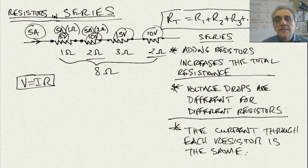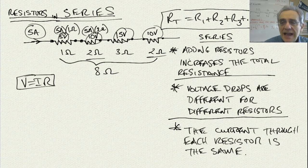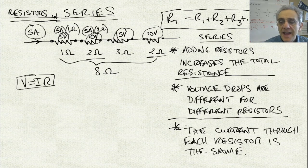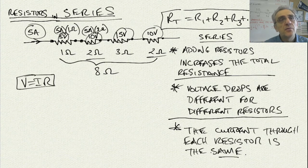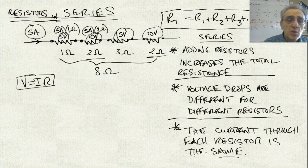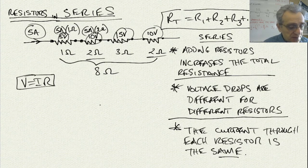Let's quickly review what we've written down for series. Adding resistors increases the total resistance. Voltage drops are different for different resistors. But the current through each resistor is the same — I'm going to underline 'same' because this is really important to remember. Now that we've reviewed resistors in series, we can move on to resistors in parallel.